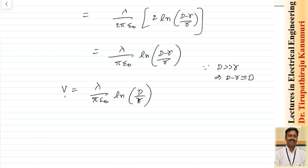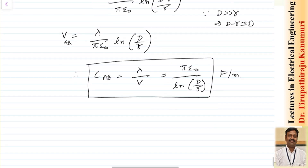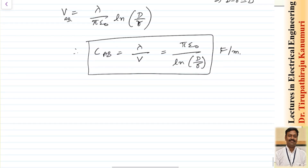This potential V is between the two points A and B. From this, the capacitance between the two conductors C_ab = lambda / V = π ε₀ / ln(d / r), in farads per meter. Note that we are using lambda (charge per unit length) rather than q, so the unit is farads per meter.